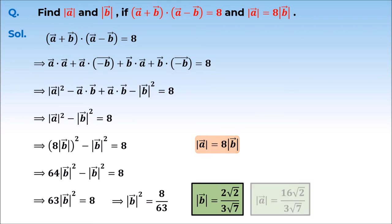Substituting the magnitude of A vector, this value is 1 root 2 upon 3 root 7. So in this case, we have found out the magnitude of vector A and the magnitude of vector B.